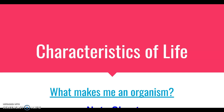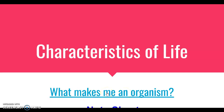The last topic in this beginning chapter of biology, chapter one, or the scientific method chapter, is the characteristics of life. There's a video clip here for you to look at, so you can pause here and go watch it on what is an organism and what characteristics and shared characteristics organisms have.